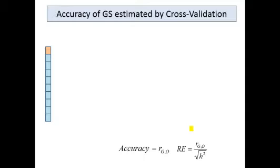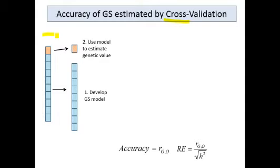The accuracy of genomic selection is often obtained by a process called cross-validation. In this process, you start with lines from your training population. In this case, that training population has been cut into 10 segments. What you do in cross-validation is use 90 of those segments — 90% of your lines — to develop a genomic selection model, running all the phenotypic and genotypic data from these individuals through the model. That model is then used to predict the value of the other 10% — these individuals whose values are predicted from an independent set of lines.